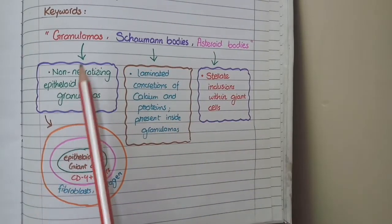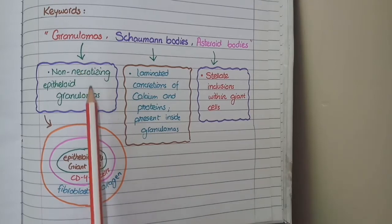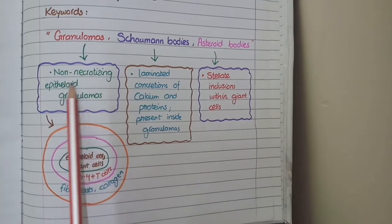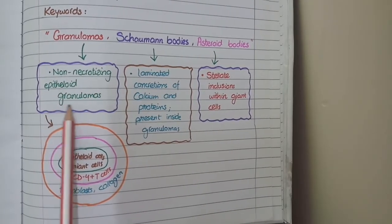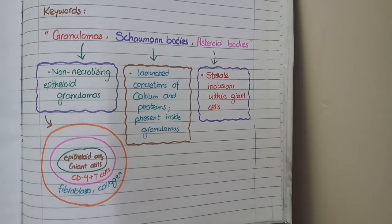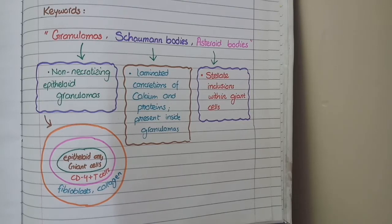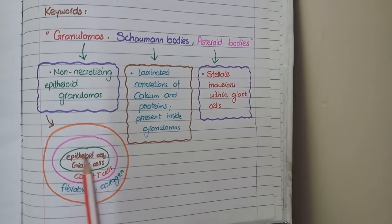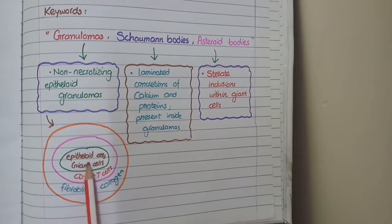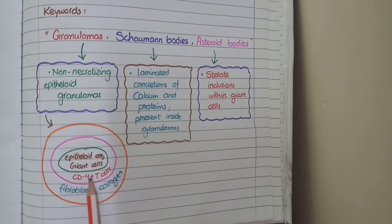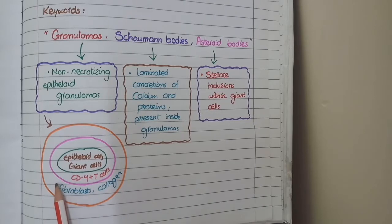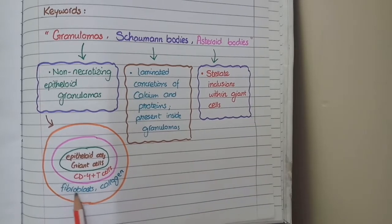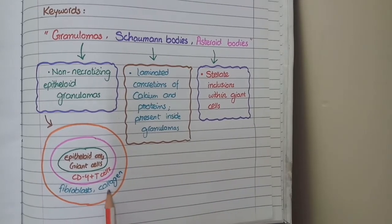Firstly, granulomas of sarcoidosis are non-caseating granulomas that do not contain caseous necrosis. These granulomas consist of epithelioid and giant cells surrounded by T lymphocytes, and the outermost layer is composed of fibroblasts and fibrosis.